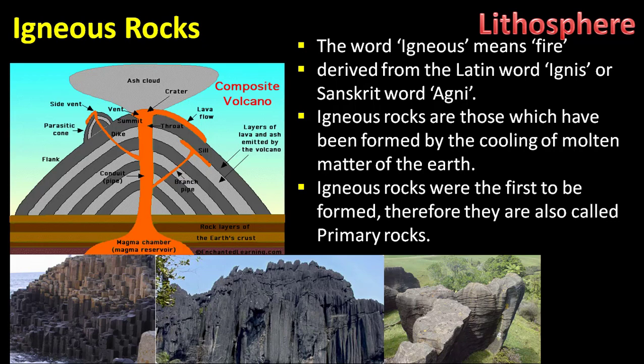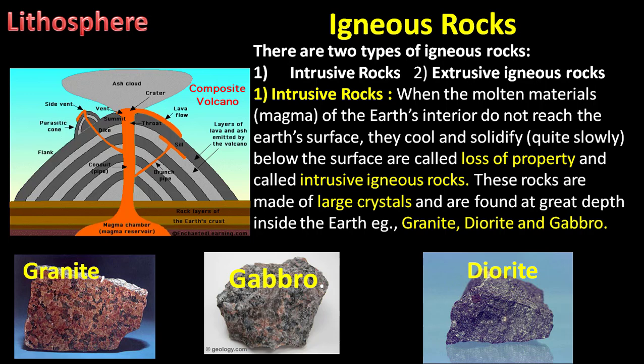There are two types of igneous rocks: intrusive rocks and extrusive igneous rocks. Intrusive means when the molten materials — the magma of the earth's interior — do not reach the earth's surface. The magma cannot reach the surface; it cools and solidifies slowly below the surface. These are called intrusive igneous rocks.